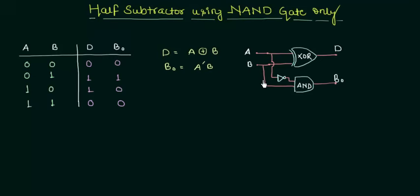Now let's move to the NAND gate implementation part. I have to implement this thing. So I will first go for the difference. And for difference you can clearly see that I require an XOR gate. And I will try to make an XOR gate by using the minimum possible NAND gate.